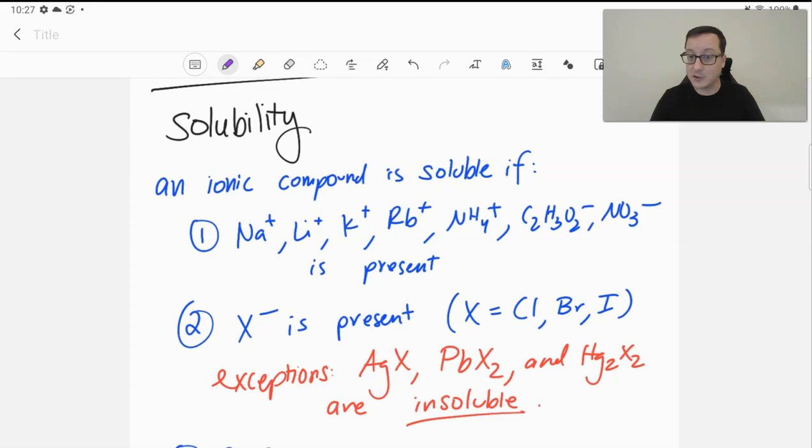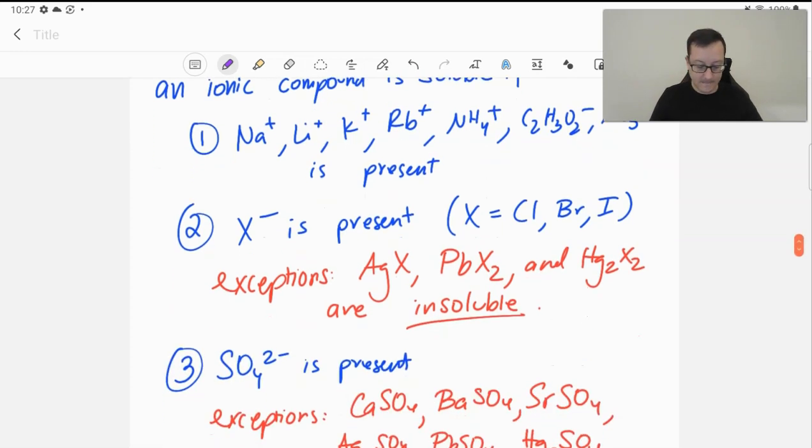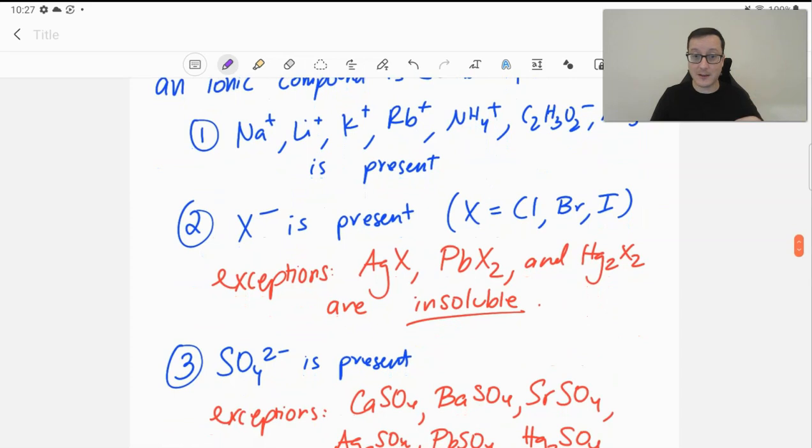However, silver nitrate or silver acetate would certainly be soluble. Our third criterion, again, any of these can work. It doesn't have to be all of them. It could be any of them.